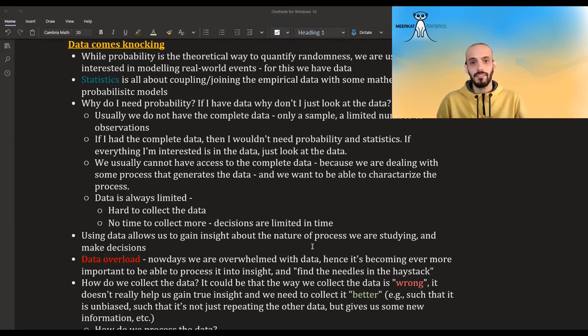What is usually the case is that we have incomplete data. And from this incomplete data, we are trying to make decisions about new data, about the future, right? We have some incomplete data about what happens in the past, and we are trying to make a prediction about what will happen in the future. So to summarize it, data is always limited. It's sometimes could be that it's just hard to collect more data. And most cases, we don't have time or money or resources to collect more, because we have to make decisions now, right? We can't wait infinitely long and collect infinitely amount of data. We have to make the decision by the deadline, by the end of the day. And so using data allows us to gain insight about the nature of the process that we are studying and make decisions.